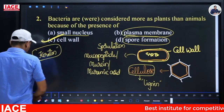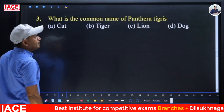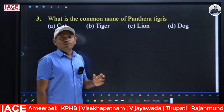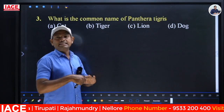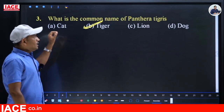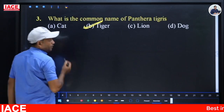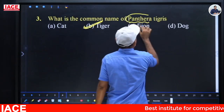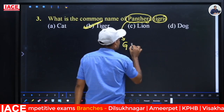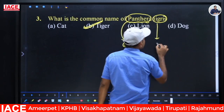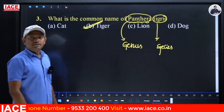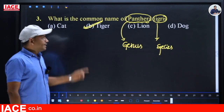Next question: What is the common name of Panthera tigris? The answer is Tiger — option B. Naming an organism with two words: Panthera is the genus name and Tigris is the species name. This system of naming with two words — genus and species — is called the binomial system.